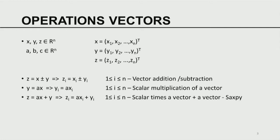Let me quickly review operations on vectors. Let X, Y, Z be vectors and A, B, C be real scalars. Z is the sum or difference of X and Y, so the ith component Zi is either the sum or difference of the two components. This is called vector addition and vector subtraction. Y equals A times X is called scalar multiplication of a vector, where Yi equals A times Xi.